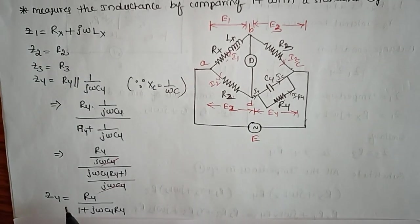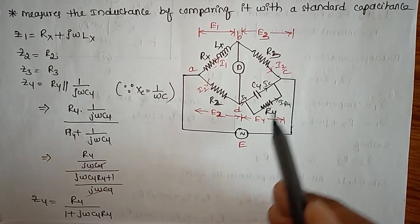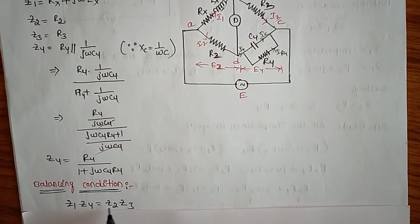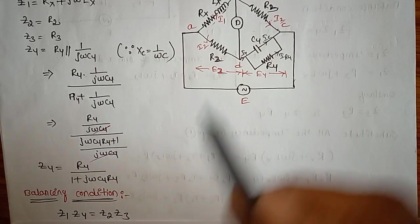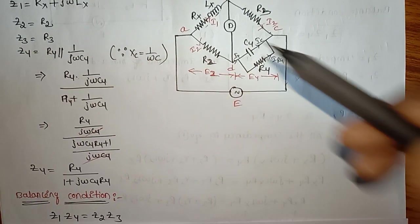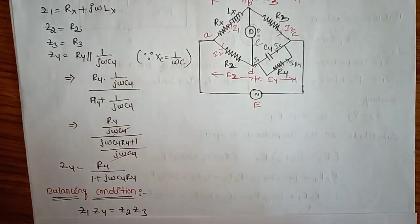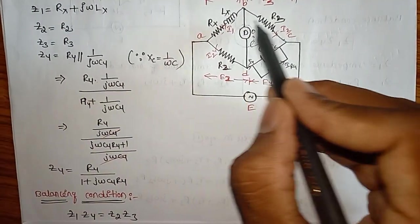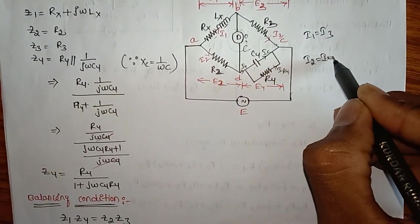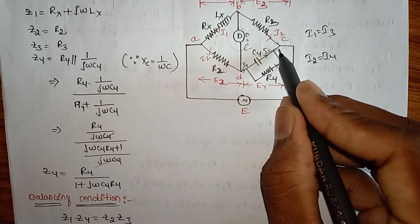Now we have all impedances Z1, Z2, Z3, Z4. The balancing condition of the bridge is Z1 × Z4 = Z2 × Z3. At balance, the current through the galvanometer equals zero — it acts as an open circuit — so I1 = I3 and I2 = I4.